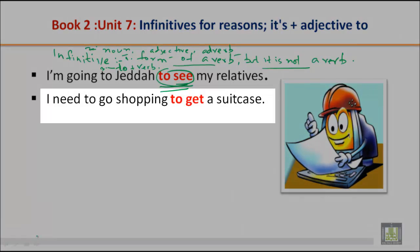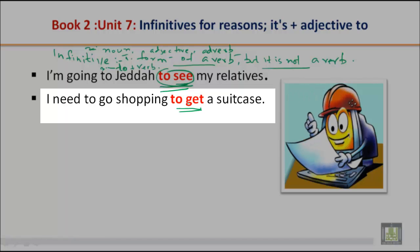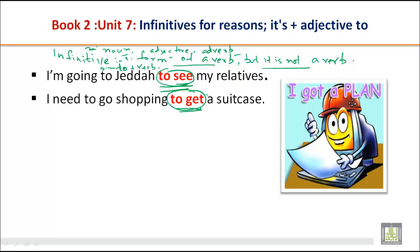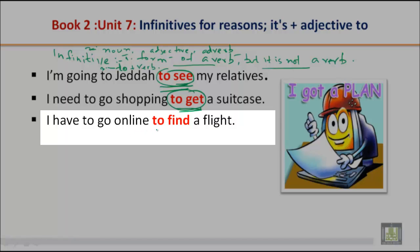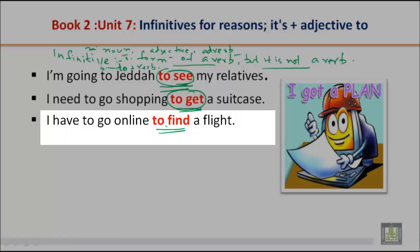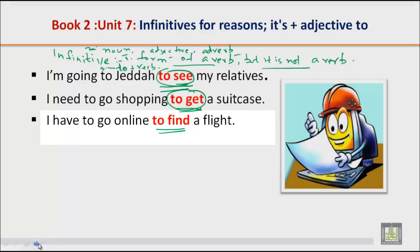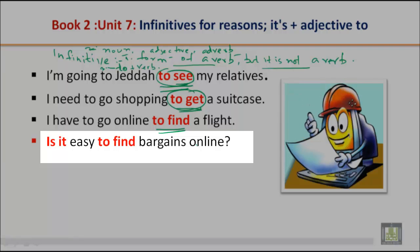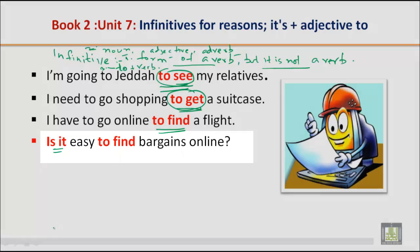Next example: 'I need to go shopping to get a suitcase.' Here, 'to get' is the infinitive, and it gives the reason why you are going shopping — to get a suitcase. Another example: 'I have to go online to find a flight.' Here we are using an infinitive for a reason. Also: 'Is it easy to find bargains online?'